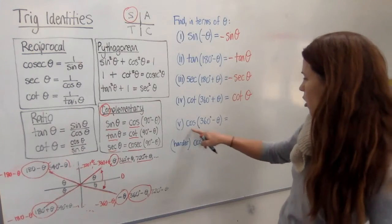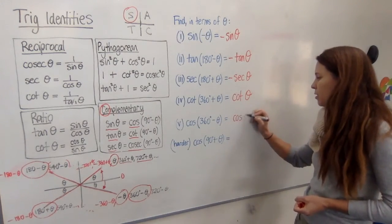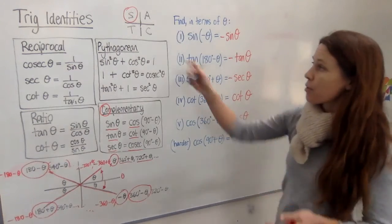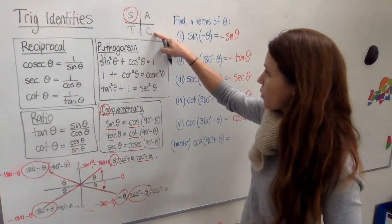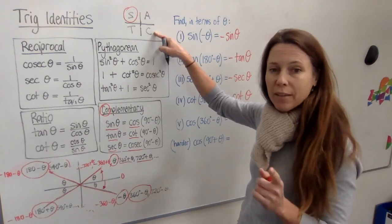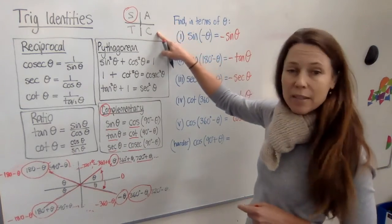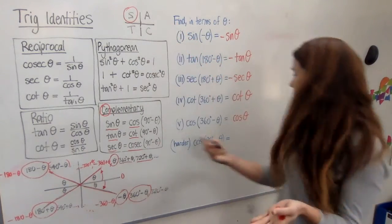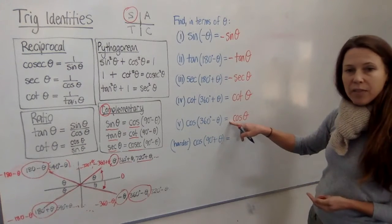All right, what about this one? Cos of 360 minus theta? Well, that's exactly the same as the cos of theta, except we have to think about the sign of it. Is it positive or negative? It's in the fourth quadrant. Cos is positive there. So the cos of theta is positive. It's up here. And the cos of minus theta is also positive. They're the same. So we're done. Cos of theta. We considered whether it needed a negative there, and it didn't. We're finished.